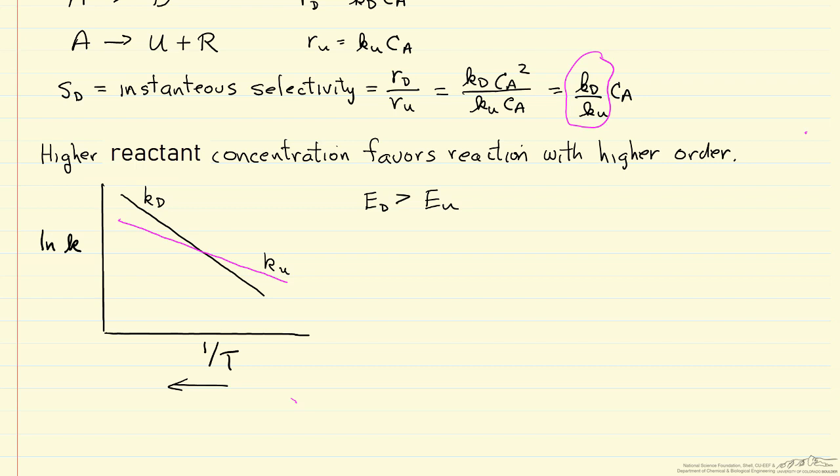Now we can write down the equation to make this a little clearer for selectivity. Selectivity for D would be a pre-exponential factor for desired reaction times this exponential activation energy.